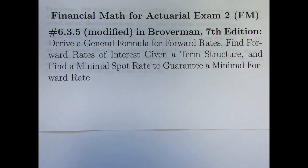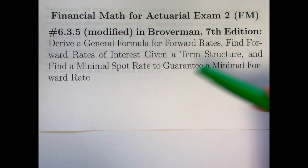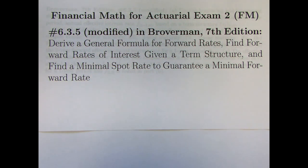Here in video 145, we're going to do a modified version of problem 6.3.5. We'll be deriving a general formula for forward rates. We first talked about forward rates in the last video, number 144. Then we'll use that formula to find some forward rates of interest given a term structure and to find a minimal spot rate that's necessary to guarantee a certain minimal forward rate.